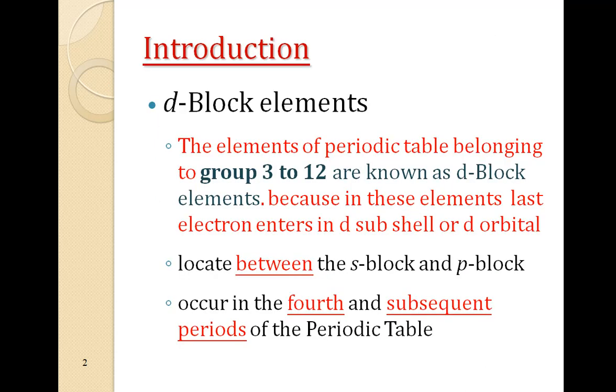First we should know what are d-block elements. The elements of periodic table belonging to group 3 to group 12 are known as d-block elements because if you write their electronic configuration you will find the last electron enters d-subshell. In the periodic table these elements are located between the s-block and the p-block elements and these occur in the 4th, 5th, 6th and 7th periods of periodic table.